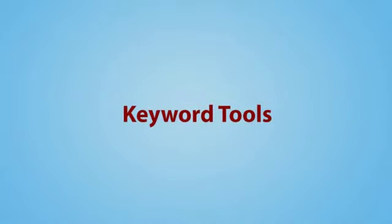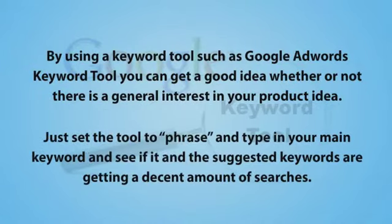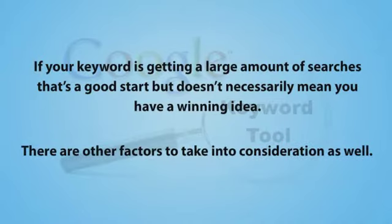Number one is keyword tools. By using keyword tools such as the Google AdWords keyword tool, you get an idea of whether or not there is a general interest in your product idea. Just set the tool to Phrase and type in your main keyword, and see if it and the suggested keywords are getting a decent amount of searches. If your keyword is getting a large amount of searches, that's a good start, but doesn't necessarily mean you have a winning idea. There are other factors to take into consideration as well.